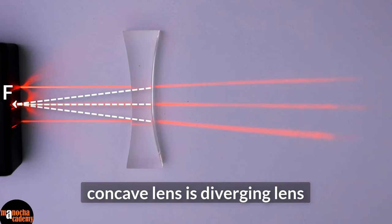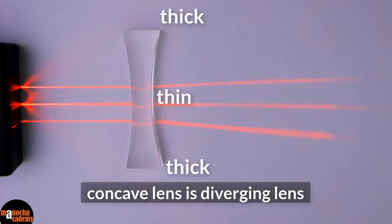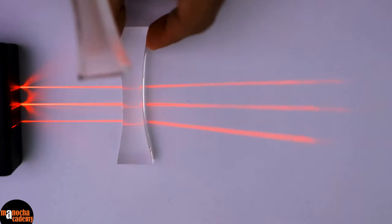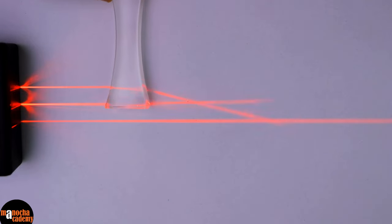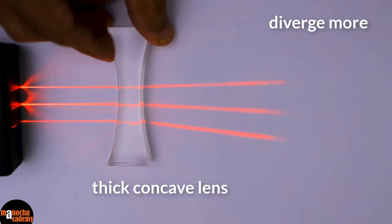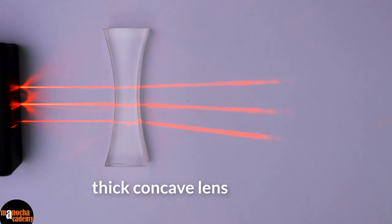The concave lens is a diverging lens. It is thin at the center and thick at the edges. Now if I replace it with a thicker concave lens, can you see the rays get diverged even more? Again, the focal length is going to be smaller for the thicker lens as it has higher diverging power.